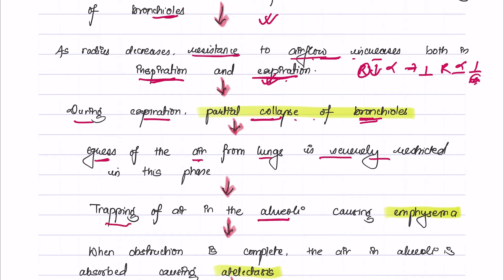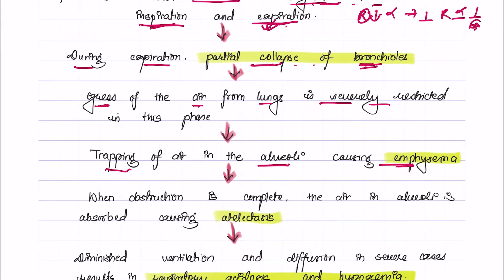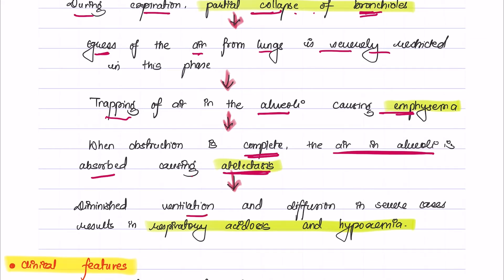This results in trapping of air in the alveoli, causing emphysema. When the obstruction is complete, the air in the alveoli is absorbed, resulting in atelectasis. Diminished ventilation and diffusion in severe cases results in respiratory acidosis and hypoxemia.